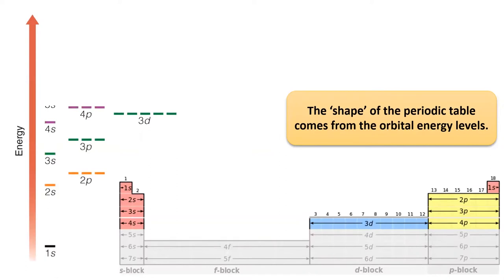Then we filled the 4S, 3D, and 4P subshells. The introduction of the D subshell has space for ten more electrons, making the table 18 elements wide at this point.